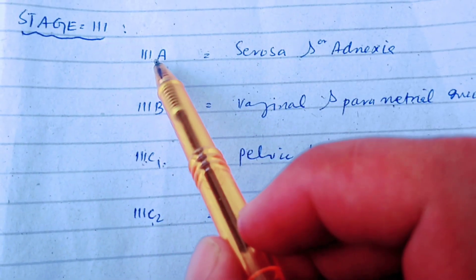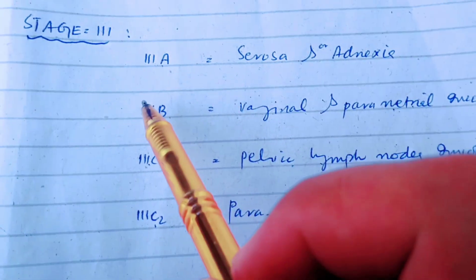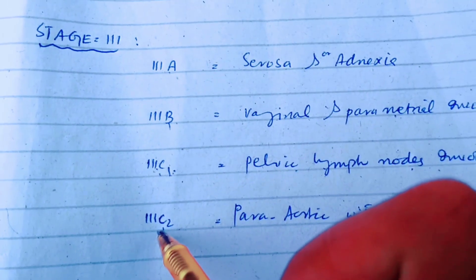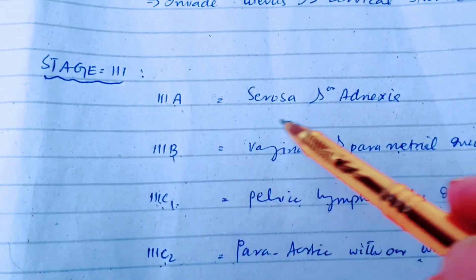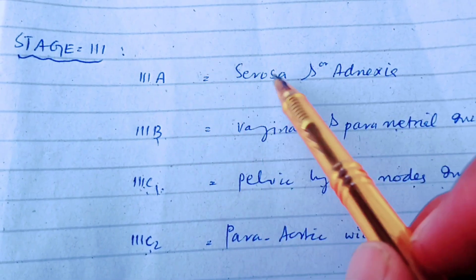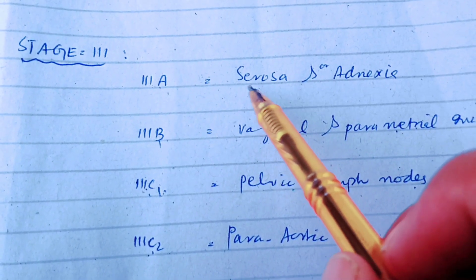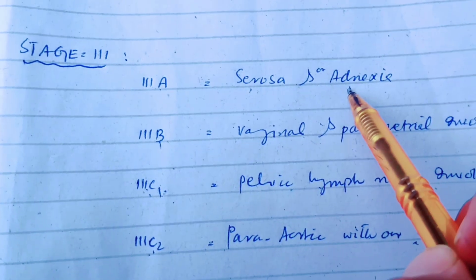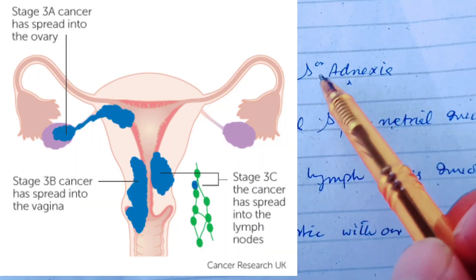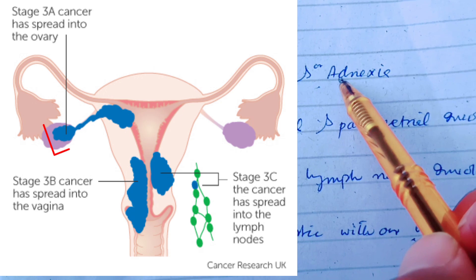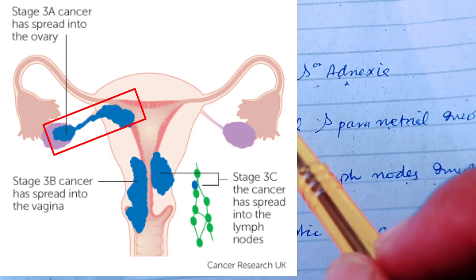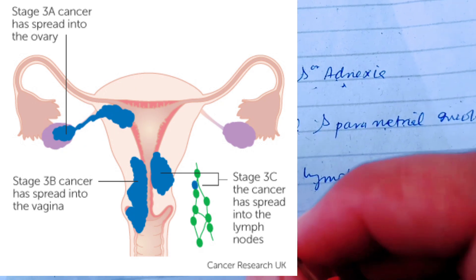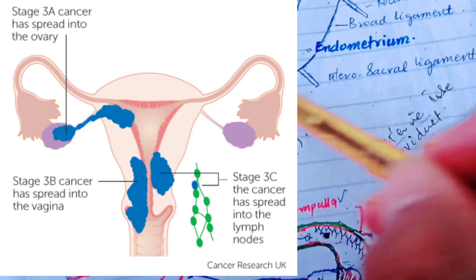Stage 3 is further divided into Stage 3a, Stage 3b, Stage 3c1, and Stage 3c2. Stage 3a is defined by invasion of the uterine serosa or the adjacent structures around the uterus when invaded by the endometrial carcinoma.